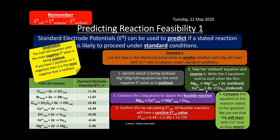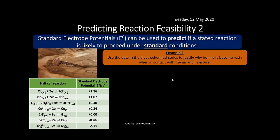We confirm feasibility by calculating E⁰cell. All feasible reactions have a positive E⁰cell value. Here: E⁰cell = 0.34 − (−2.38) = +2.72 V — positive, so it is feasible. Example 2: justify why iron nails rust in air and moisture. The Fe2+/Fe half cell (E⁰ = −0.44 V) is oxidized; the O2 half cell is used because oxygen causes rusting. After balancing electrons (×2 the iron equation), the overall equation shows iron reacting with oxygen and water. E⁰cell = +0.84 V — positive, confirming feasibility.